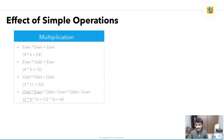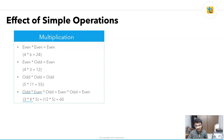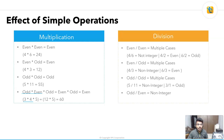Now let's look at multiplication. Multiplying two even numbers gives an even number — for example, 4 times 6 equals 24. Multiplying an even number with an odd number also gives an even number. Multiplying two odd numbers gives an odd number. A very important rule: when you multiply an even number with any other integer, the result is always even, and combinations follow the same properties.